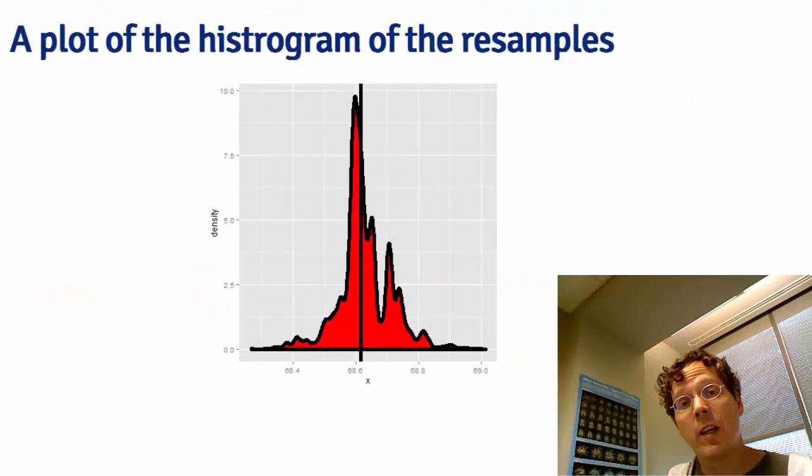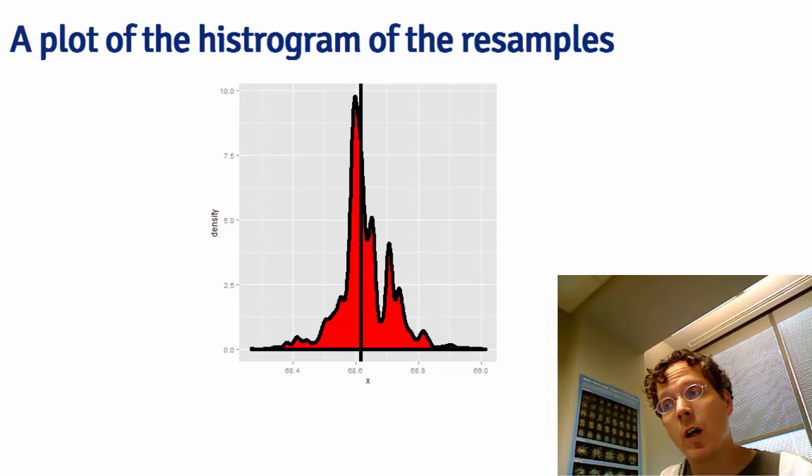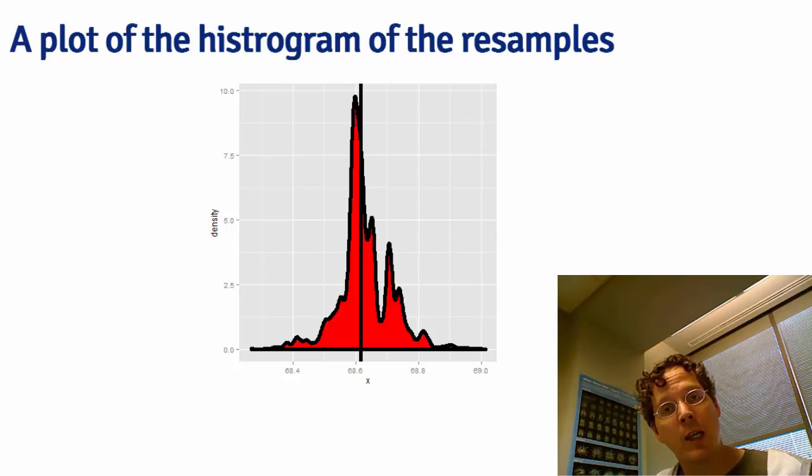So here's a density estimate from the resampled medians. I've drawn a vertical line for our observed median. So what we've done in this case is we've taken our vector of son's heights and we've repeatedly drawn from this collection of son's heights a new data set of the same length where we drew with replacement with equal probability on every observed data point.